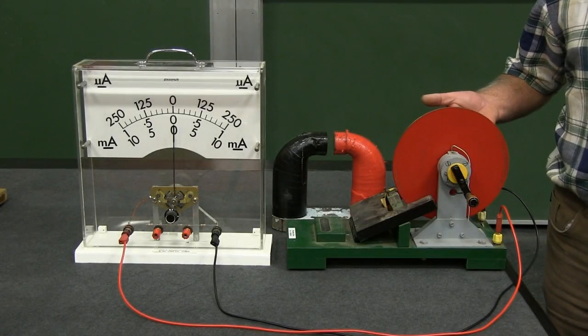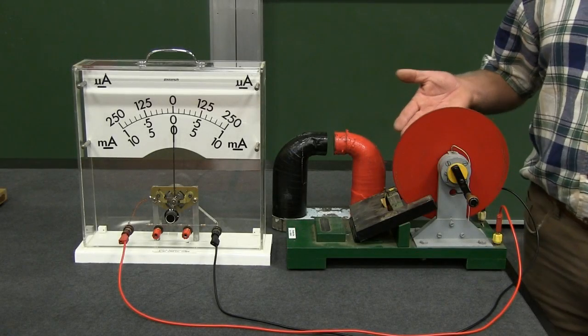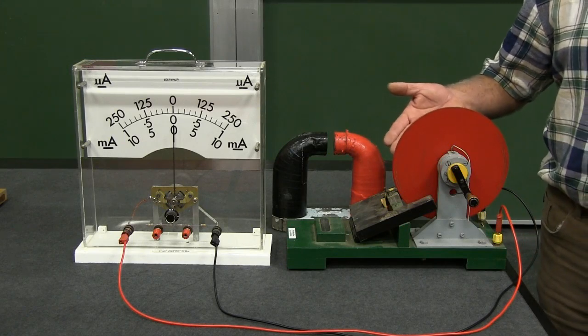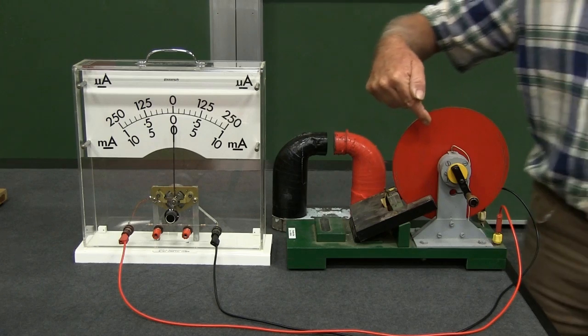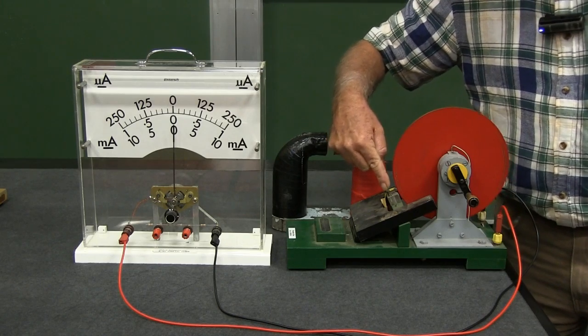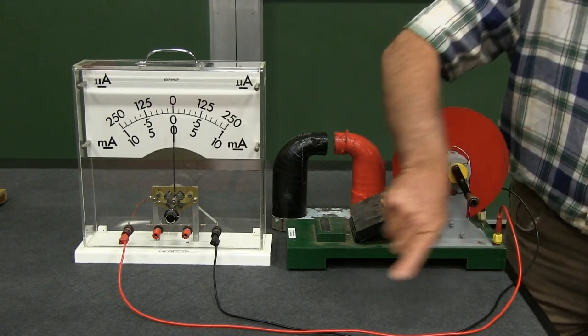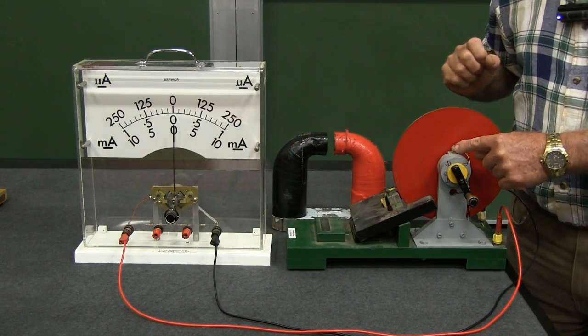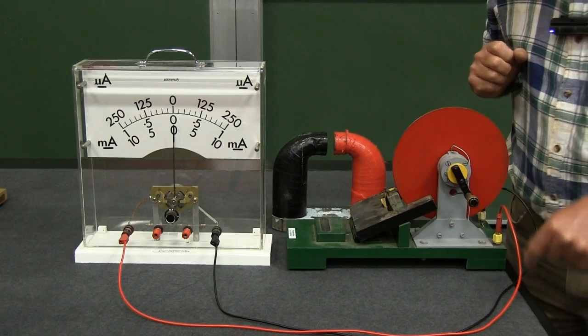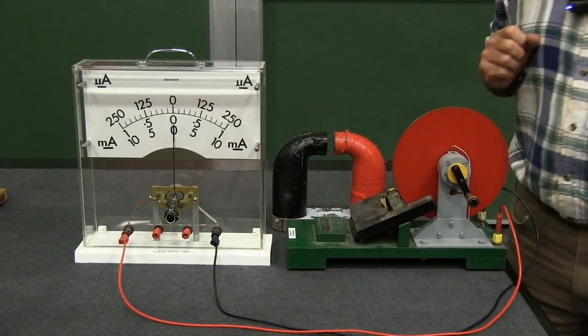The apparatus we have here is an example of a very simple electric generator. We have a large copper disk that is connected on the outside through wires to this microammeter. The center of the disk is also connected through the other wire to the microammeter.